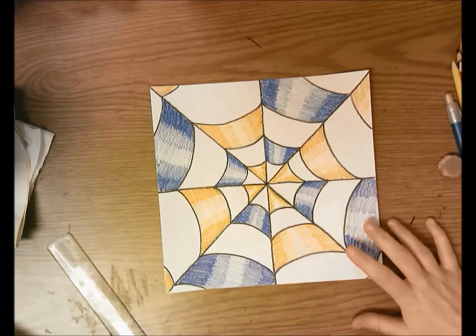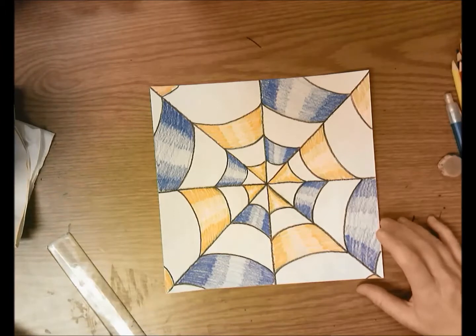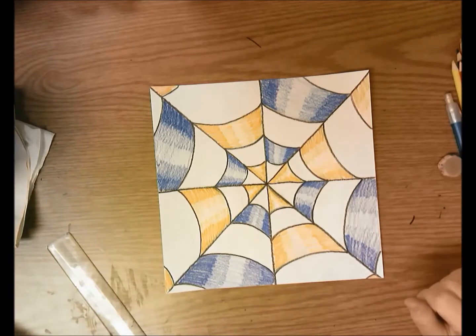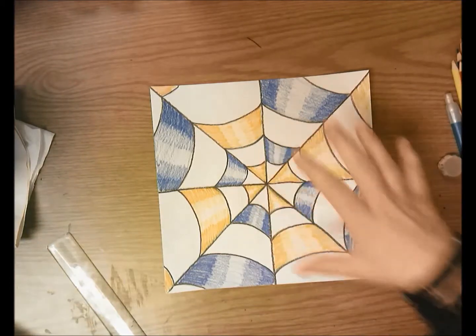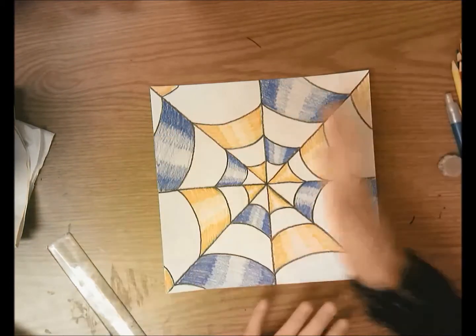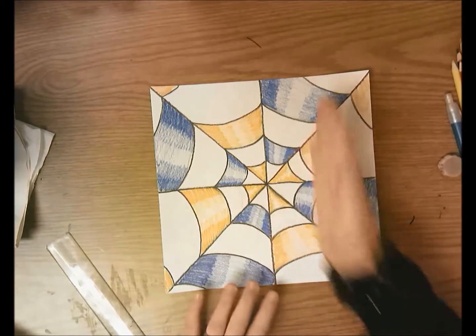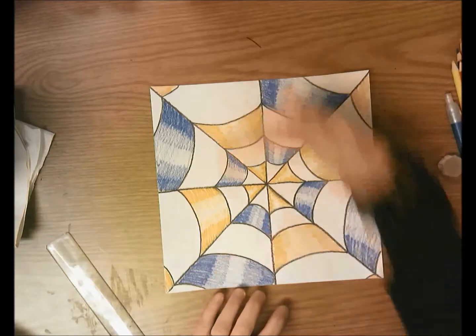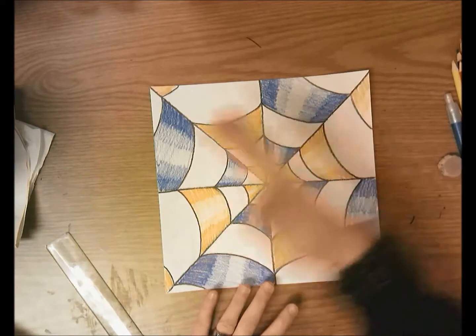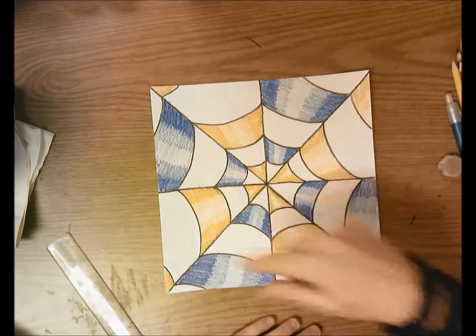Hello, so today we're going to create this optical illusion that covers two learning objectives. The first one is I can identify and use radial balance. Remember that radial balance has a center, things coming off that center, no matter where you cut it in half it's the same on both sides. If you cut it down vertically it's the same on both sides, horizontal top to bottom is the same, any diagonal it would be the same on both sides, so it's symmetrical all the way around.